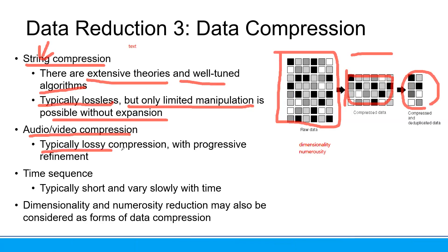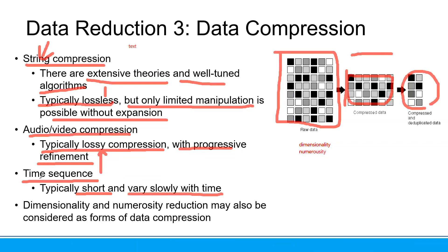Typically it's lossy compression, with progressive refinement. We will check what is lossless and what is lossy. Time sequence data can also be compressed. So there are 3 kinds of data compression: string, audio/video, and time.